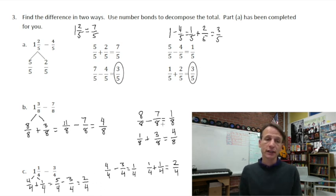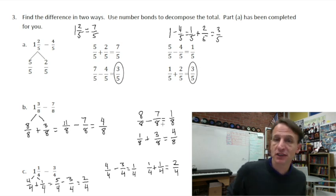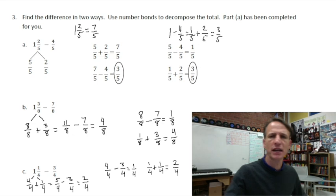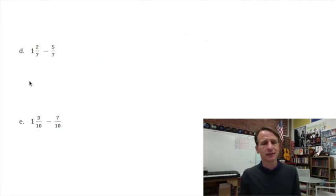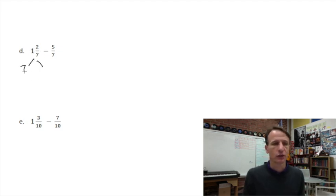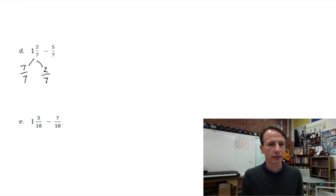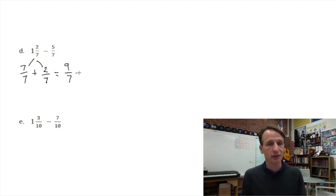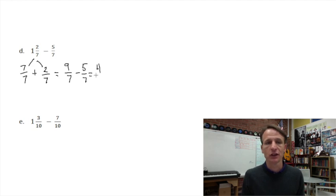Problems 3d and 3e are more of the same. For 3d: 1 and 2/7 minus 5/7. One whole is 7/7; combined with 2/7 that's 9/7. Nine minus five is four, so the answer is 4/7.